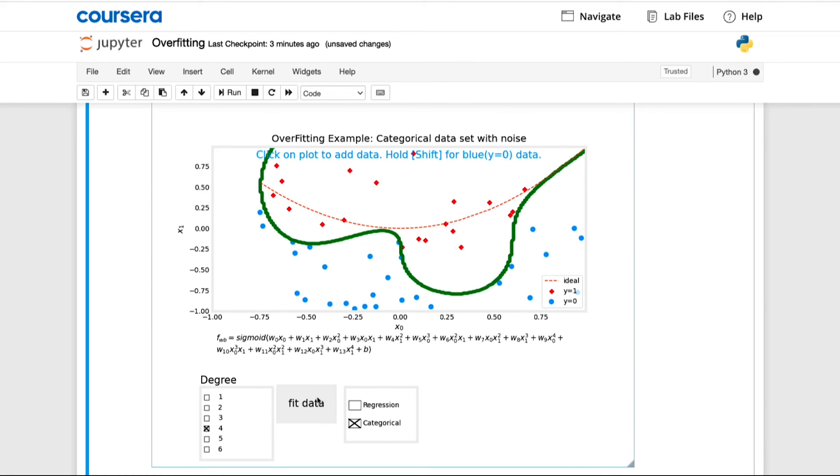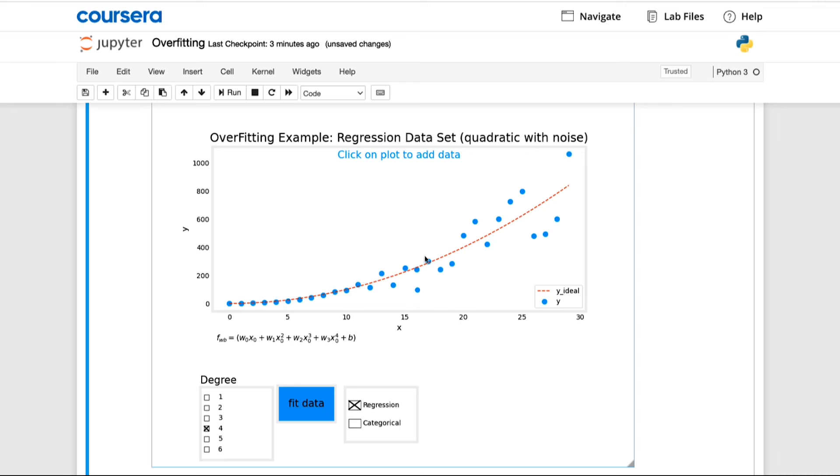You'll also be able to add your own data points by clicking on the plot and see how that changes the curve that is fit. You can also try examples for both regression and classification and you'll be able to change the degree of the polynomial to be x, x-squared, x-cubed, and so on. The lab also lets you play with two different options for addressing overfitting. You can add additional training data to reduce overfitting and you can also select which features to include or to exclude as another way to try to reduce overfitting. So please take a look at the lab, which I hope will help you build your intuition about overfitting as well as some methods for addressing it.